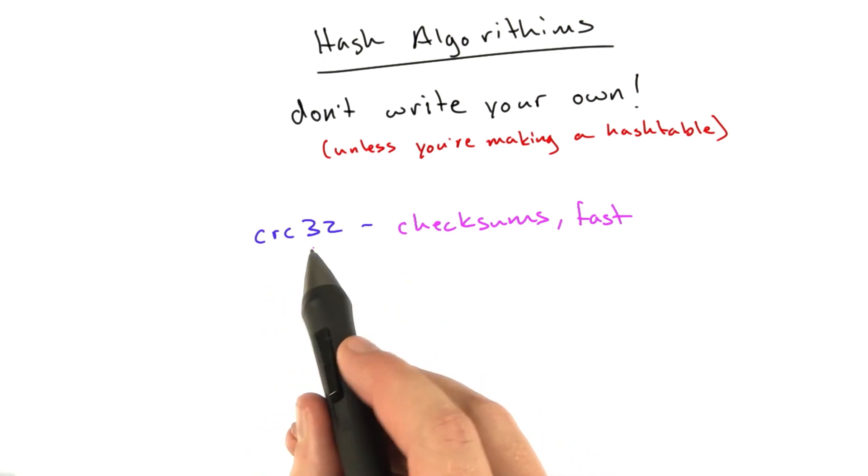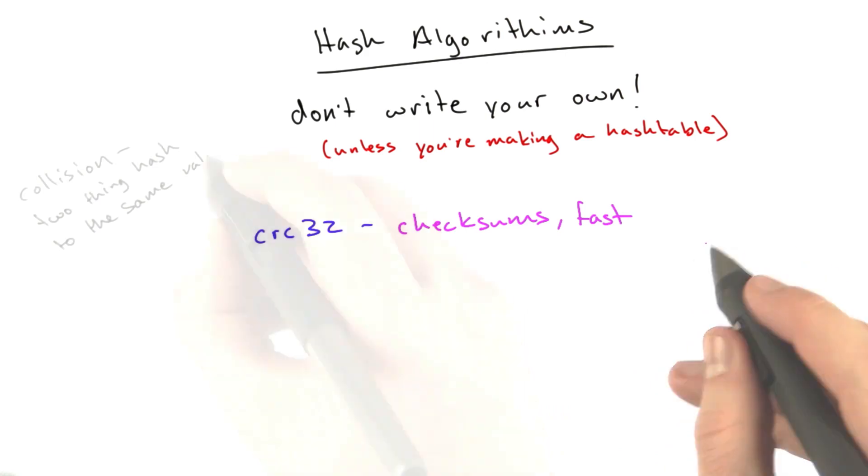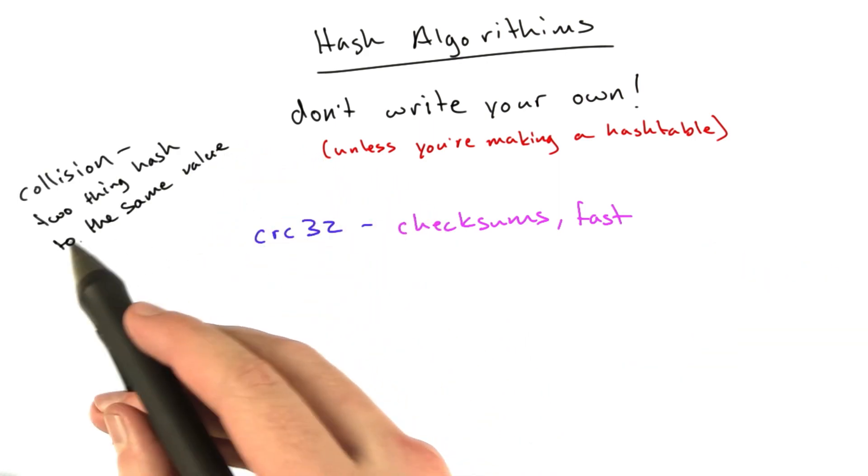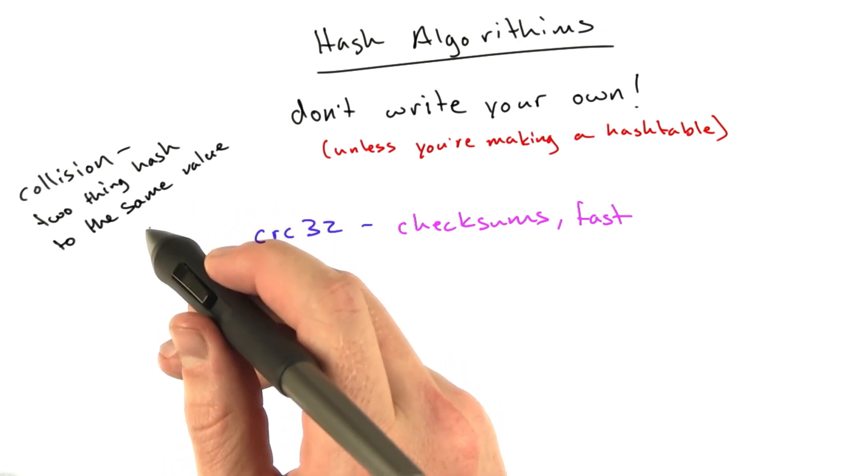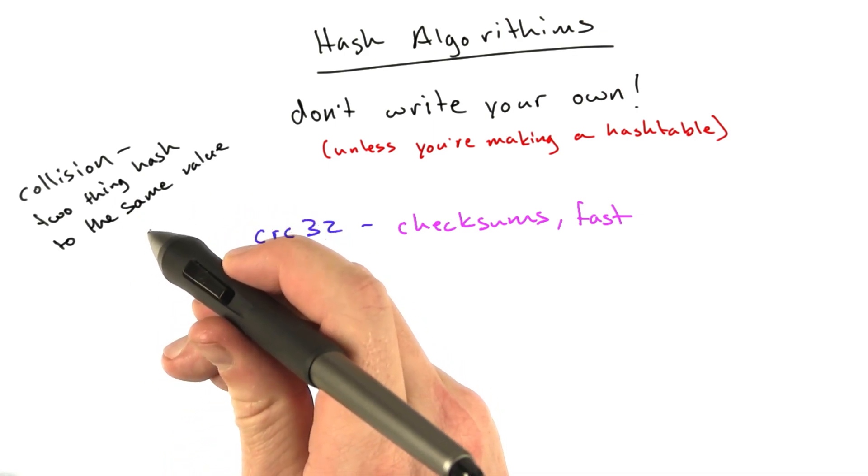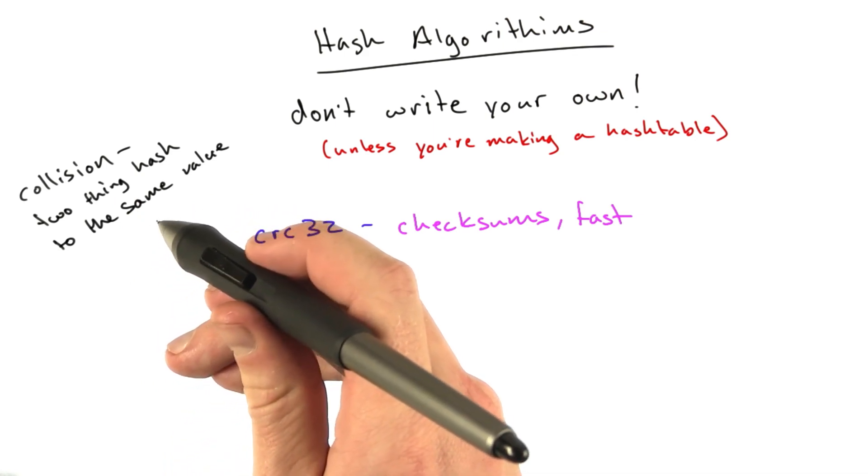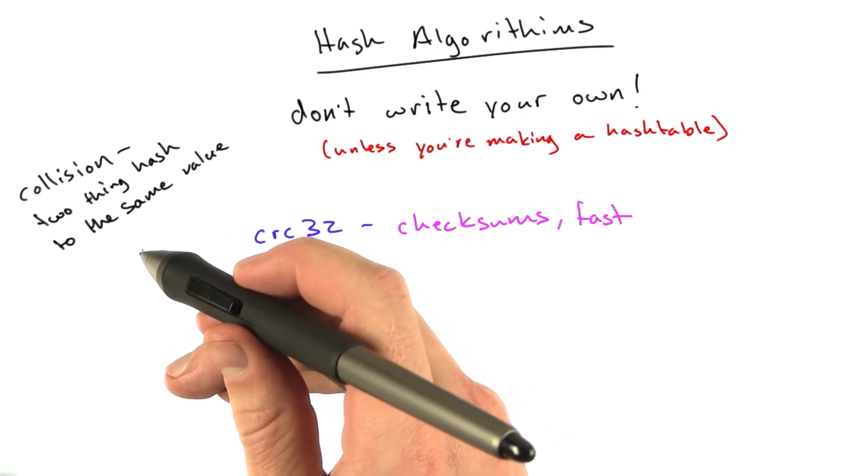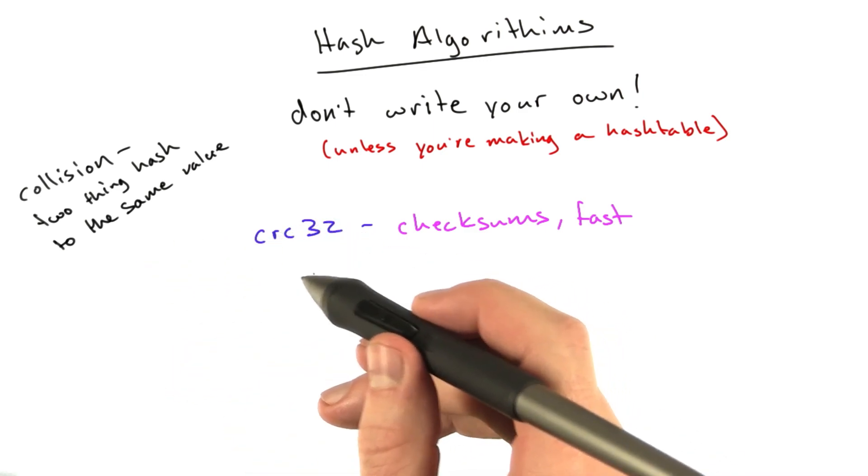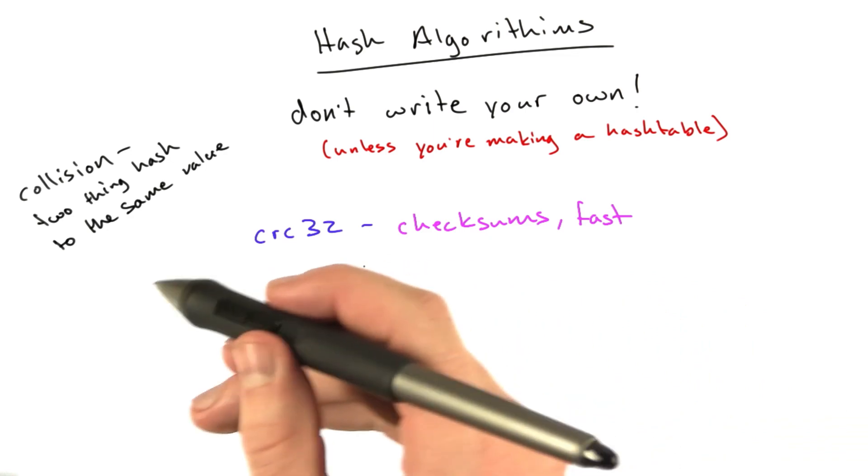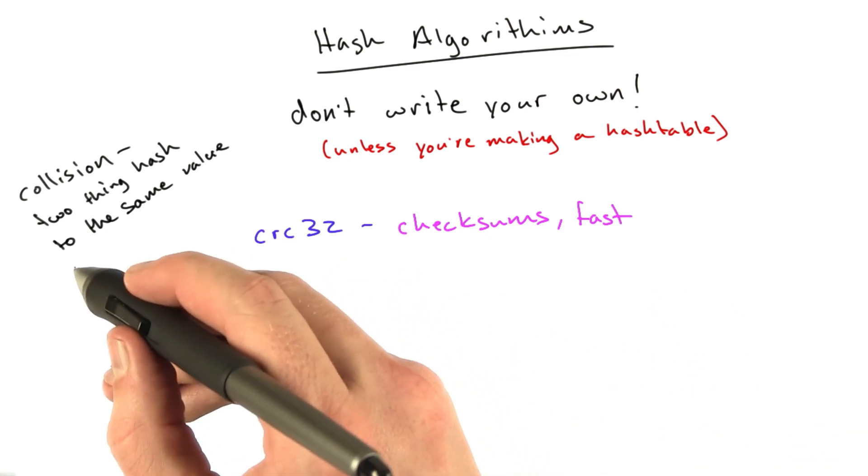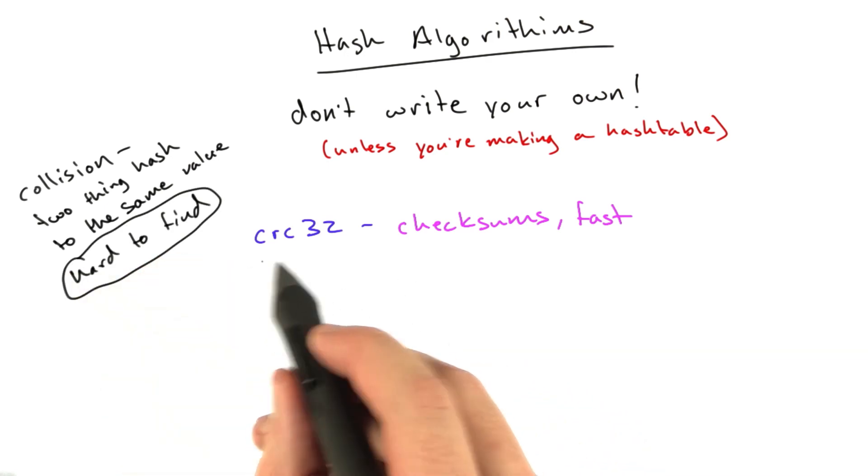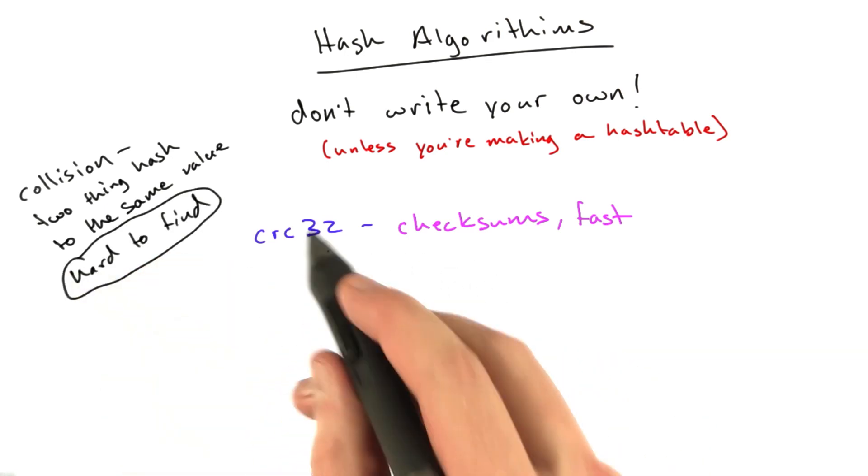It's very easy to find what we call a collision, which is when two things hash to the same value, which is the whole point of a hash is that we can get a different value for almost anything that we're going to hash. Now, obviously, if the size of the input is substantially greater than the size of the output, yes, there are going to be collisions. The whole point is that it's hard to find them, and with CRC32, it's very easy to find them.